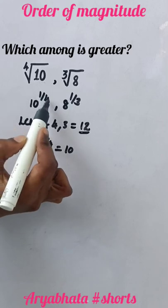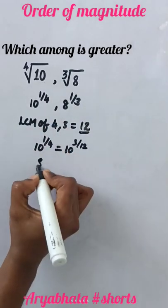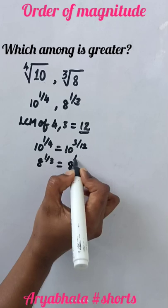We'll change 1/4 to 3/12, so 10 to the power 3 divided by 12. And 1/3 becomes 4/12, so 8 to the power 4 divided by 12.